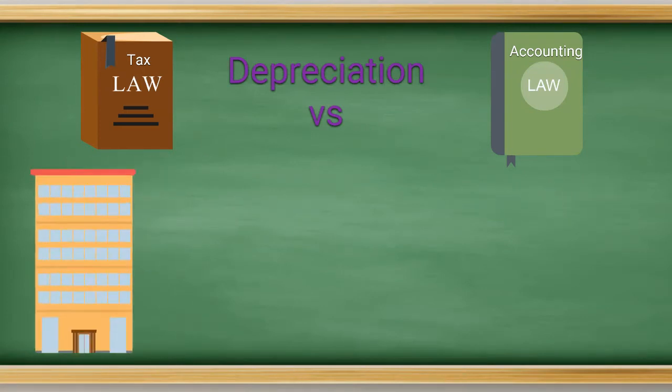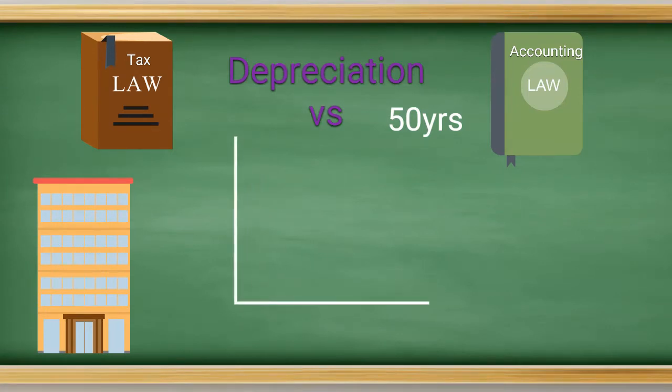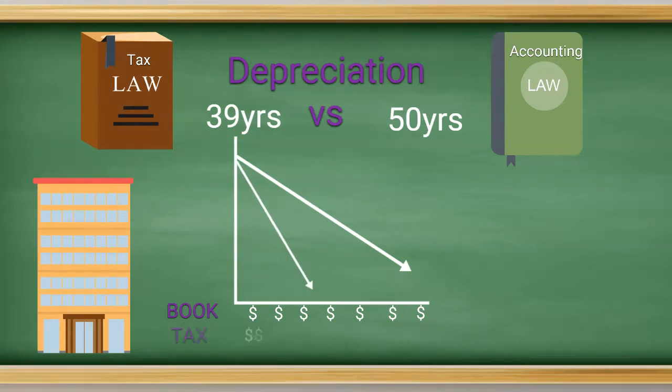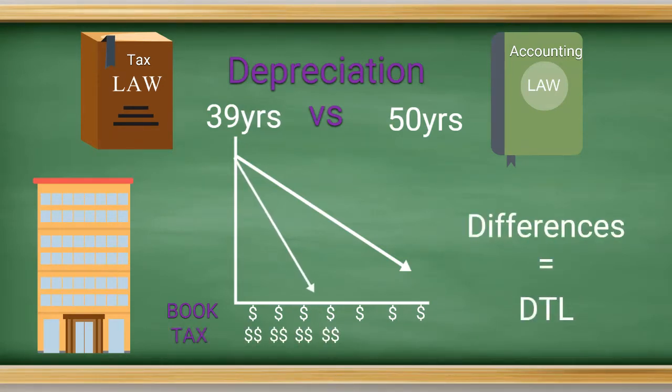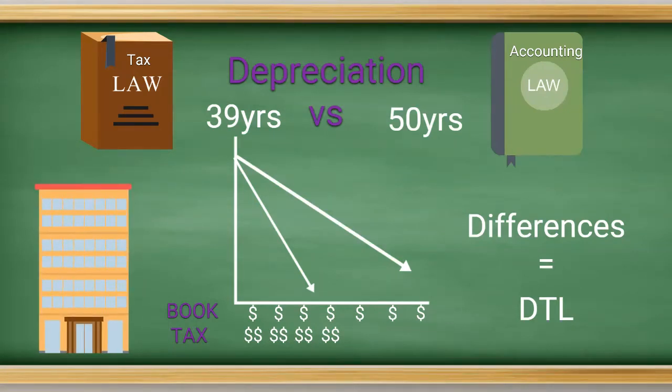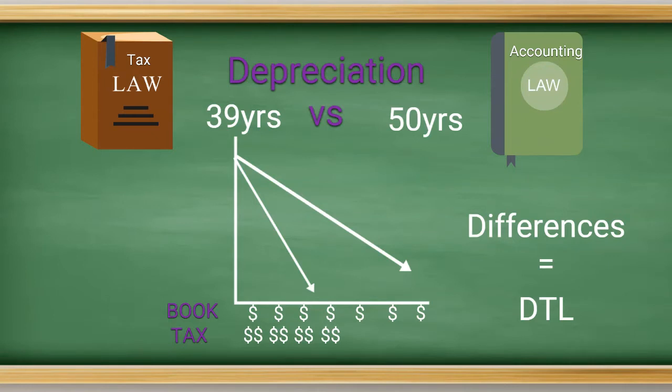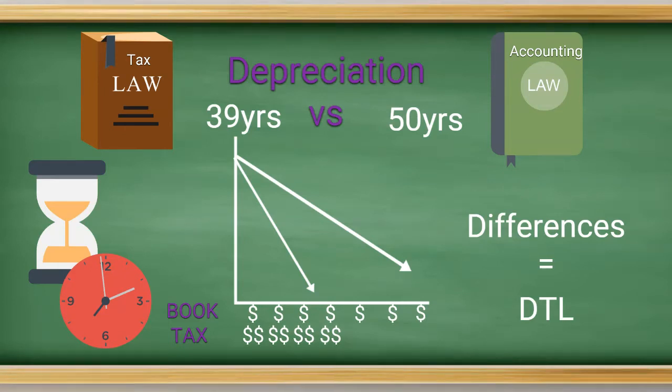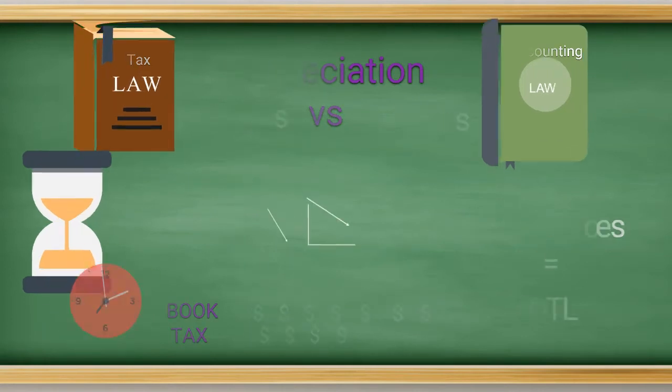So let's assume you bought an office building for your business and are depreciating that building over 50 years. Each year, you would depreciate the asset based on those inputs. But for taxes, you would depreciate based on the MACRS 39-year life. The difference in those expense amounts creates your deferred taxes. In this example, you are depreciating the asset quicker for tax purposes, reducing taxable income. However, by the end of the depreciation life, they will eventually equal zero dollars together. This timing difference creates a deferred tax liability, or a DTL. This is because you've taken the additional deductions now, but will eventually have to pay those taxes in the future.